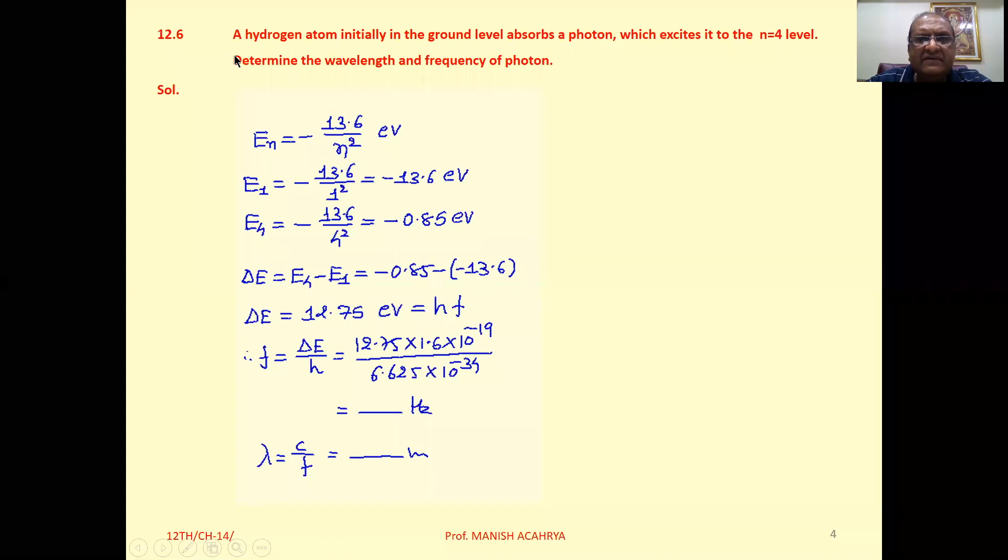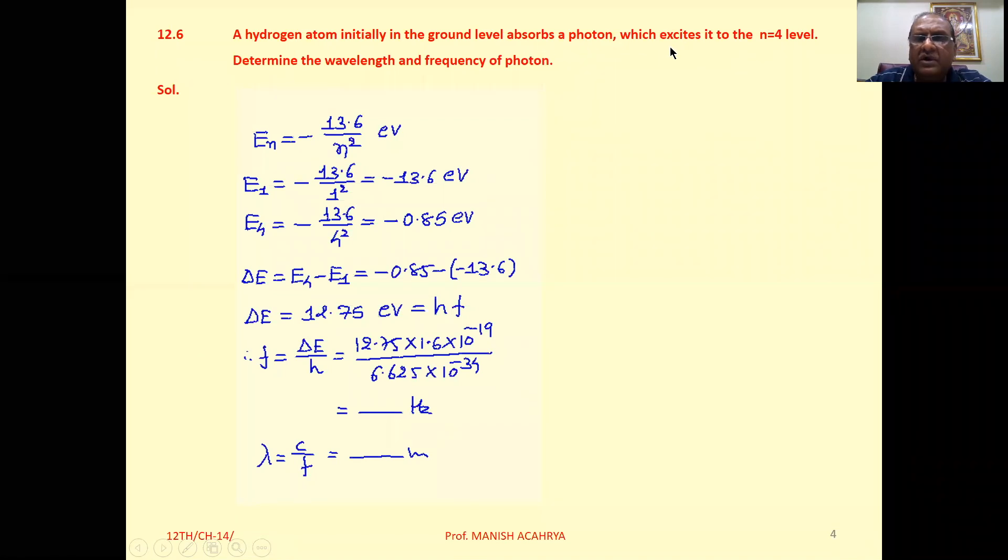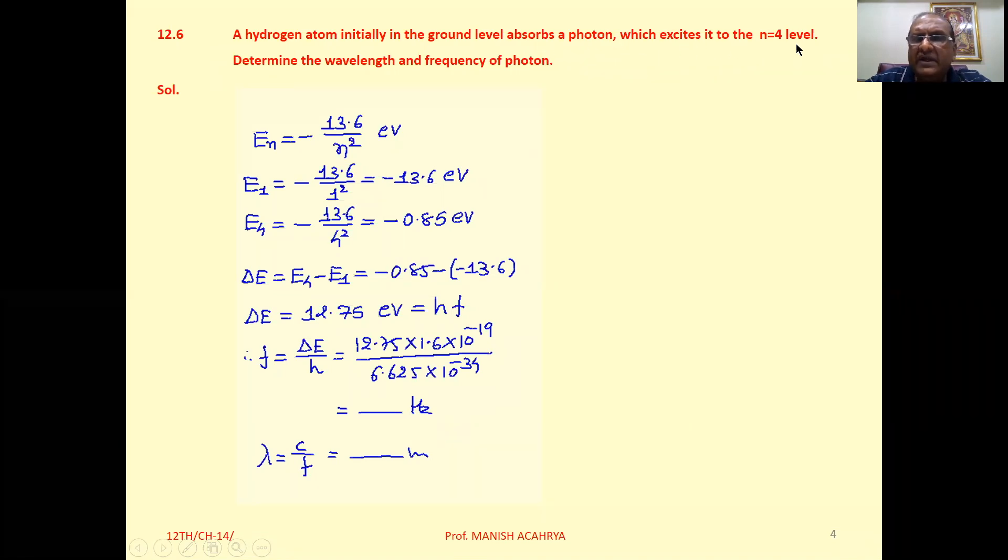Problem 12.6: A hydrogen atom initially in the ground level absorbs a photon which excites it into the n equals four level. Determine the wavelength and frequency of the photon.